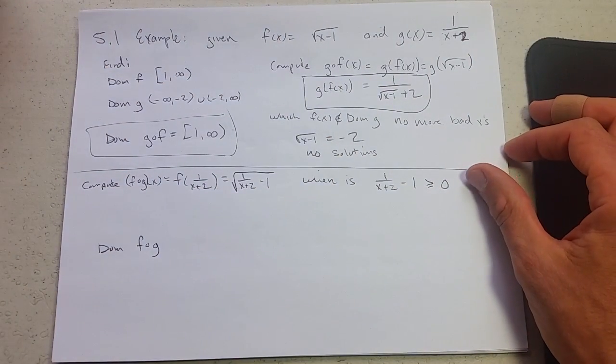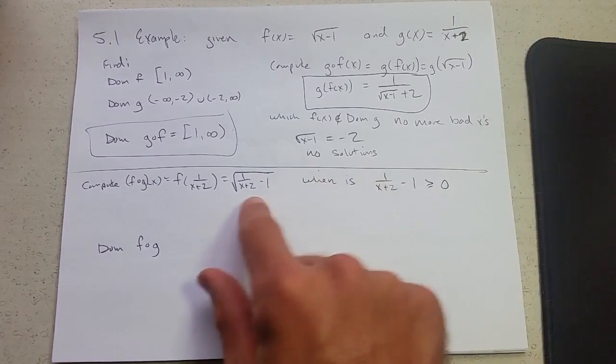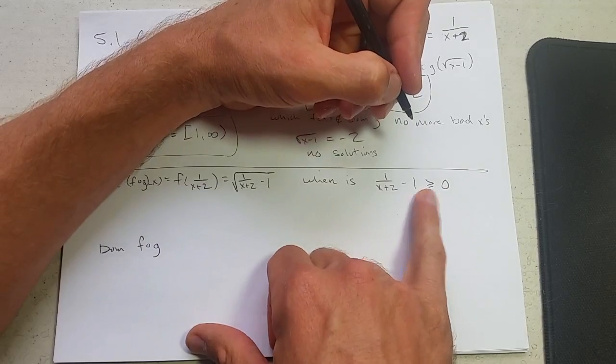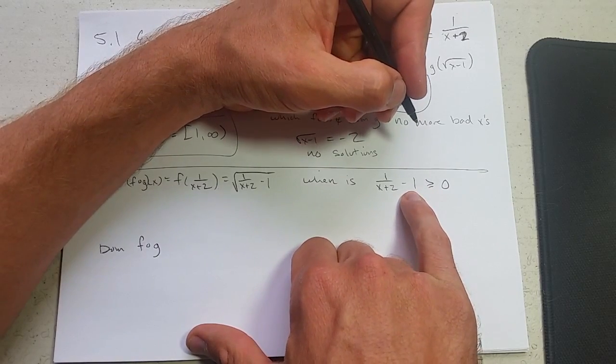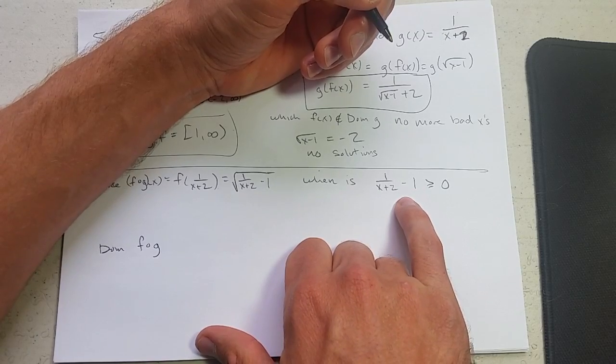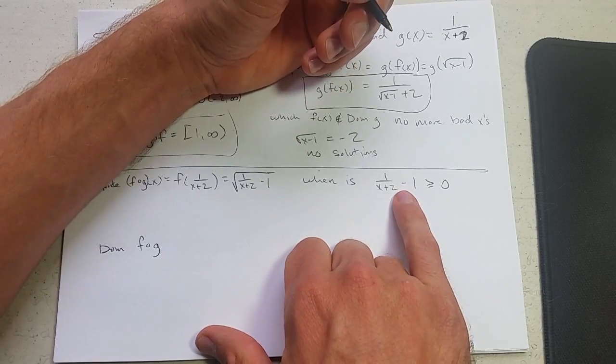So if we are very careful about that, we could figure out when is 1 over x plus 2 minus 1 greater than or equal to 0. So this will be what values we're allowed to use. And obviously negative 2 is already out. How do we solve this? We did this before. We're going to have to go common denominator, turn into a rational function, graph, and then figure out when is it positive above the x axis.